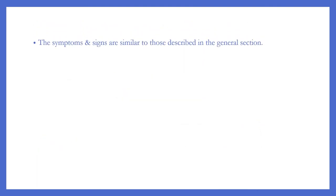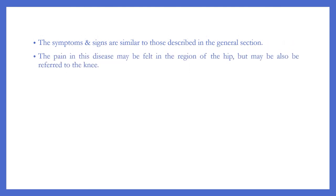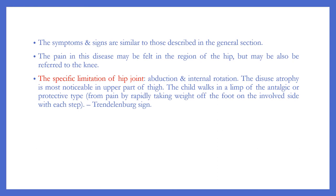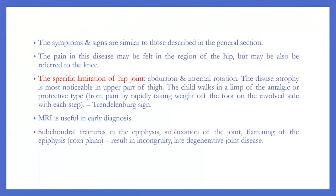The symptoms and signs are similar to those described in the general section. Pain may be felt in the region of the hip but may also be referred to the knee. There is specific limitation of hip joint reduction and internal rotation. Disuse atrophy is most noticeable in the upper part of the thigh. The child walks with a limp of the antalgic or rotative type — relieving pain by rapidly taking weight off the involved foot with each step — or a Trendelenburg gait. MRI is useful in early diagnosis. Radiographic findings include subchondral fractures, subluxation of the joint, and flattening of the epiphysis resulting in incongruity and late degenerative joint disease.